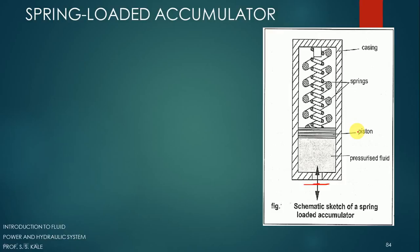When excess energy needs to be stored, fluid enters against the spring force, pushes the piston upward, and the spring exerts a downward opposing force — similar to how dead weight provided the opposing force in the previous type. This builds up pressure in the fluid, which is stored. When the pressurized fluid is required, the valve is opened and the pressurized fluid flows out to the application. Because a spring is used, this is called a spring-loaded accumulator.